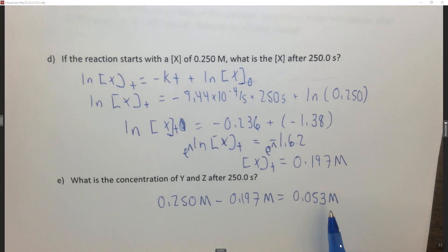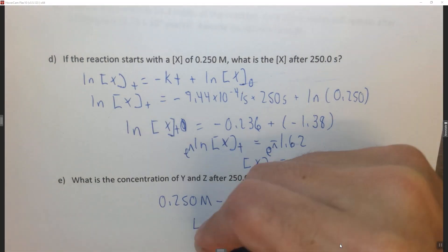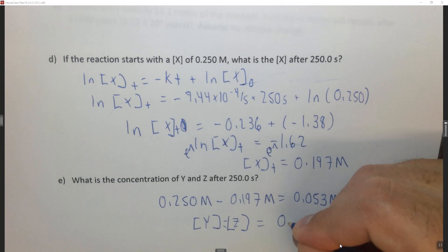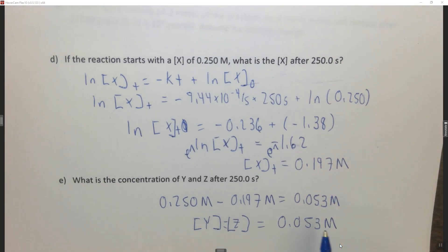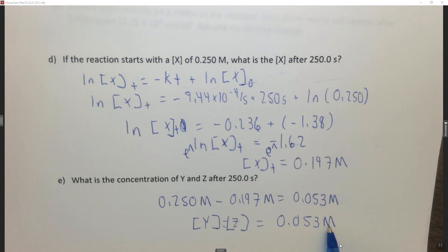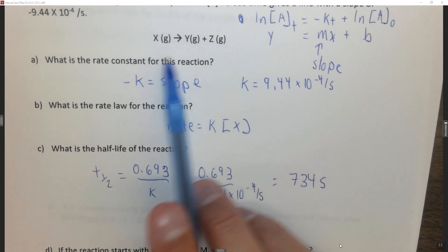Which means we lost 0.053 molar x. But it also means that we gained the concentration of y and the concentration of z, because they're all one-to-one, is 0.053 molar. The concentration of x went down by 0.053 molar, and each of these concentrations went up by 0.053 molar, because they're all one-to-one.